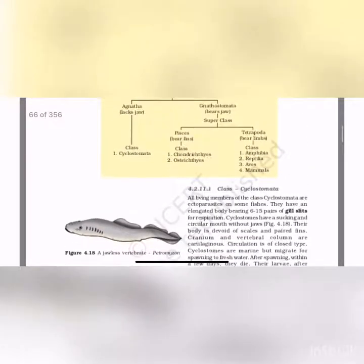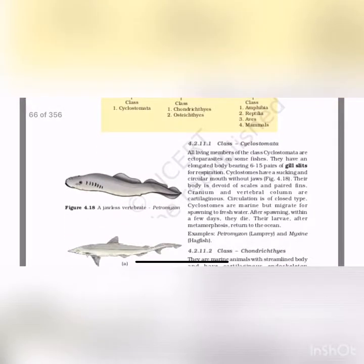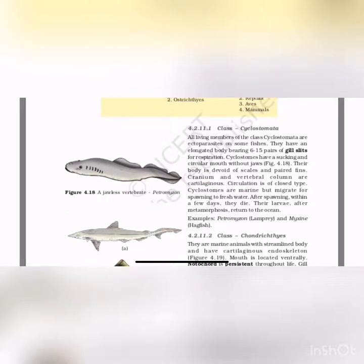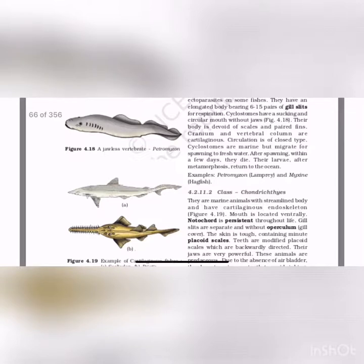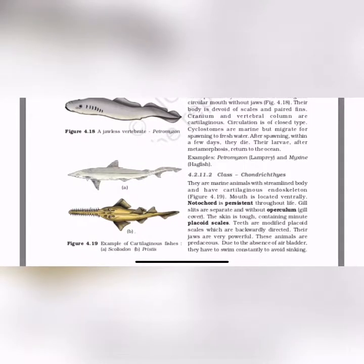Class Cyclostomata: all living members are ectoparasites on some fishes. They have an elongated body with pairs of gill slits for respiration. Cyclostomes have a sucking, circular mouth without jaws. The body is devoid of scales and paired fins; cranium and vertebral column are cartilaginous. Circulation is closed type. Cyclostomes are marine but migrate to freshwater for spawning; after spawning they die within a few days; larvae after metamorphosis return to the ocean. Examples: Petromyzon (lamprey) and Myxine (hagfish).